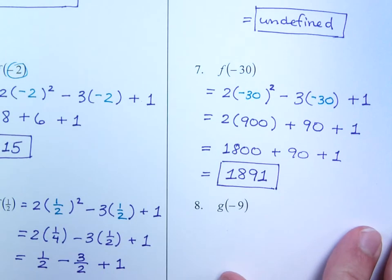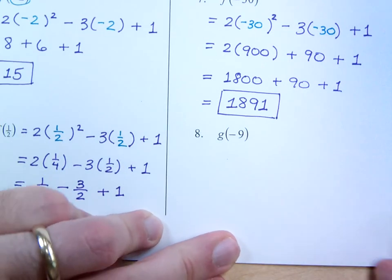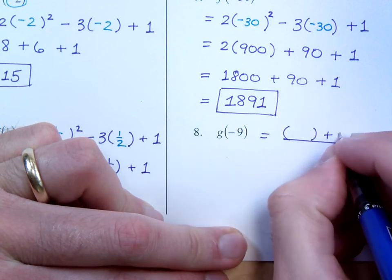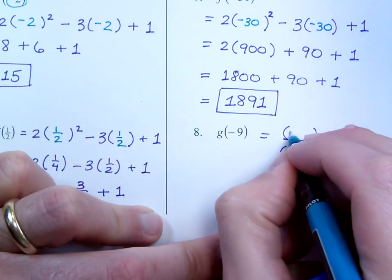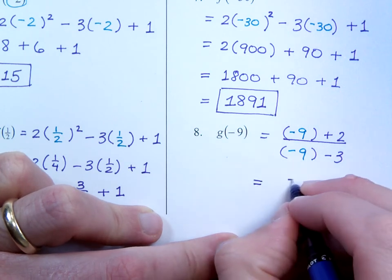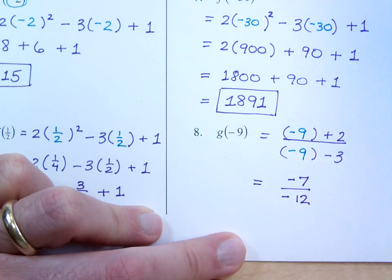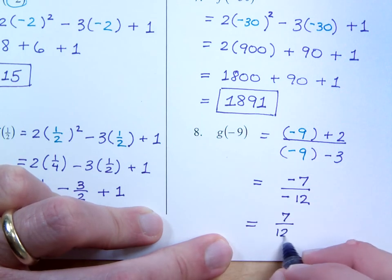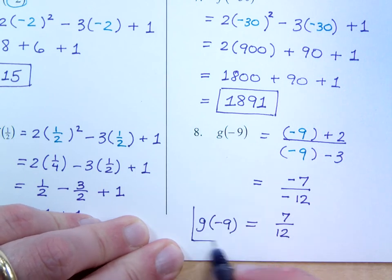And finally we have g of negative 9. So replace the x's with parenthesis. That was x plus 2 over x minus 3. Plug in negative 9. Make sure you're very careful about your signs here. I get a negative 7 in the numerator over negative 12 in the denominator. So when I finish simplifying this, this is just a positive 7 over 12. So remember it's not what g of x equals. This is what g of negative 9 equals.